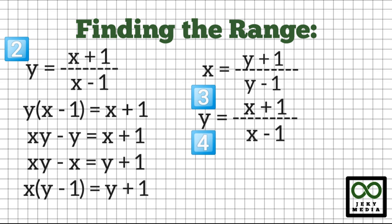Step 4: Let's focus on the denominator and equate it to 0. x minus 1 equal to 0. Transposing negative 1 to the right to isolate x on the left, we have x is equal to 1.